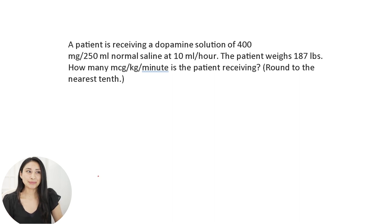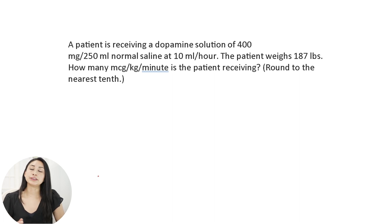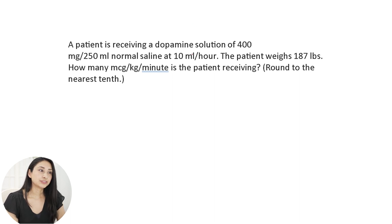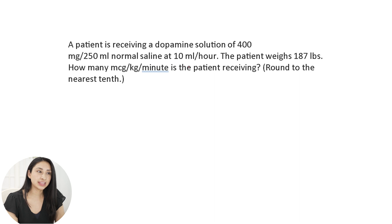On the HESI, they may get complicated because typically in nursing school you have to find milliliters per hour, and they provide you with the micrograms per kilogram per minute — but not the HESI. A patient is receiving a dopamine solution of 400 milligrams per 250 milliliters of normal saline at 10 milliliters per hour. The patient weighs 187 pounds. How many micrograms per kilogram per minute is the patient receiving? Round to the nearest tenth.